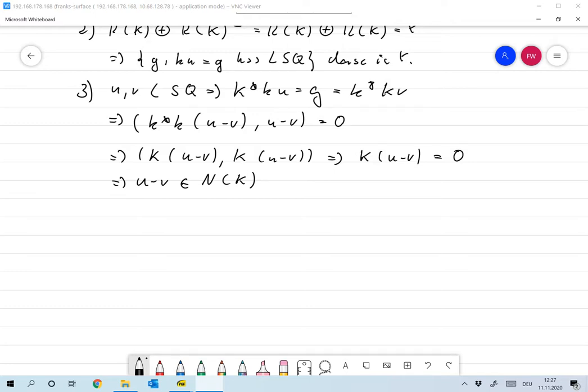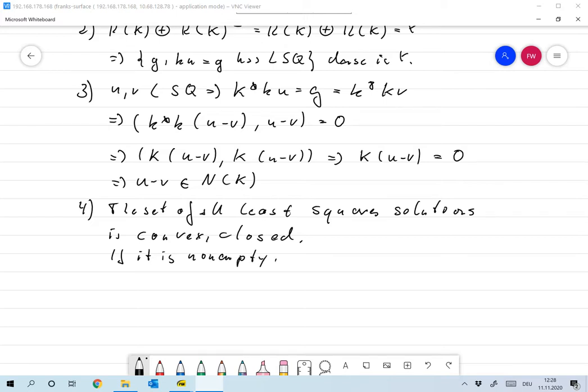Now, what else? Yeah, that's also something I've already mentioned. The set of all least squares solution is convex and closed and using the theorem I had in the last lesson. If it is non-empty the norm minimum is unique. So, that means that the minimum norm solution exists and is unique.